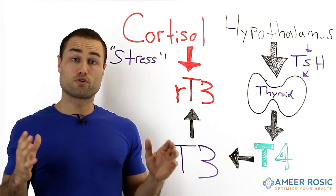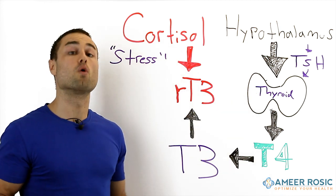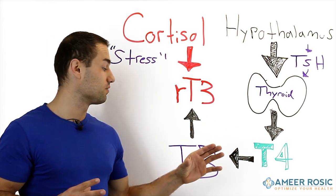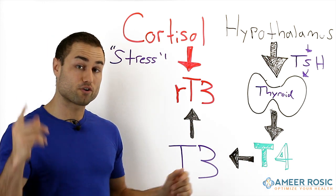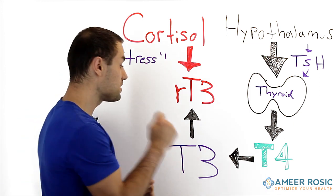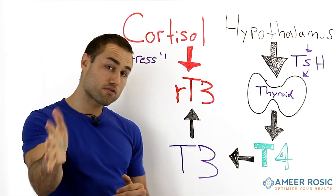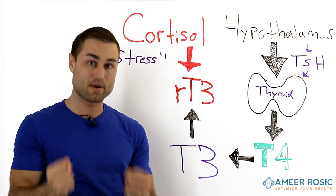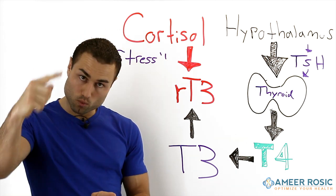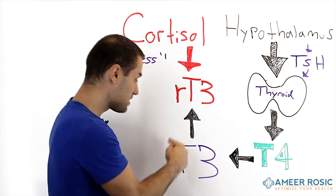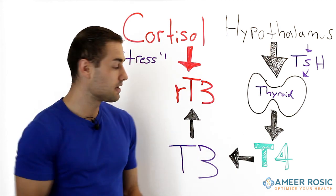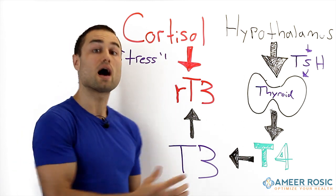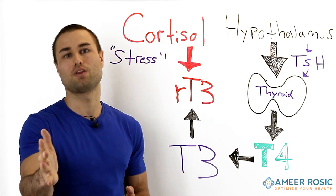Your thyroid gland produces something called T4. T4 is a compound that will go throughout your body and be transformed into T3. T3 is the active form that you need in your body to become healthy. T3 is the active form; T4 is not the active form. So you want normal levels of T3.